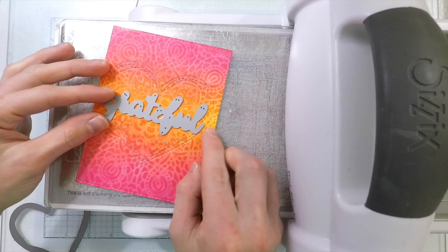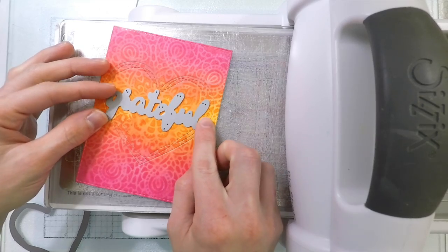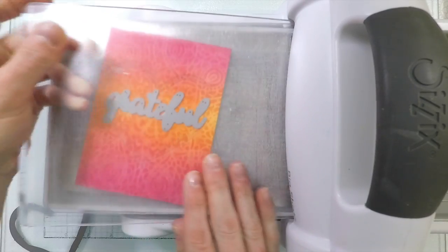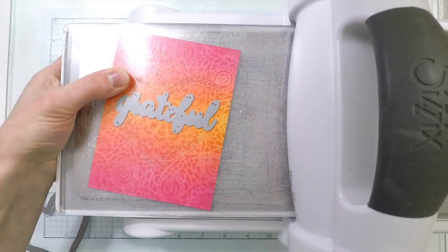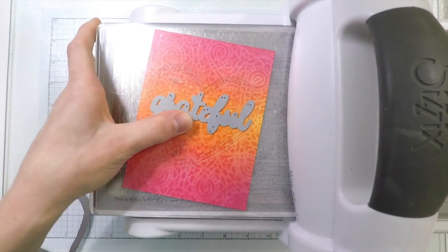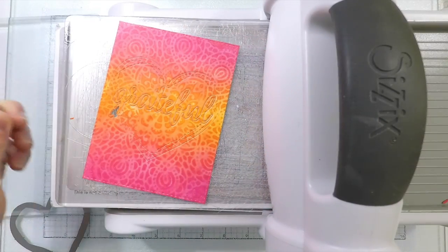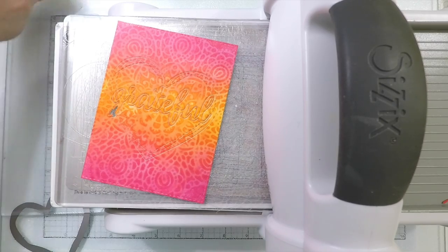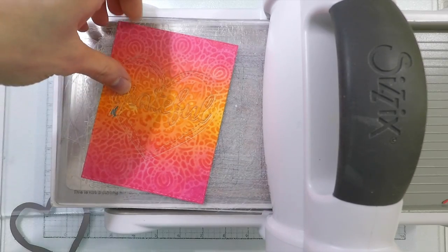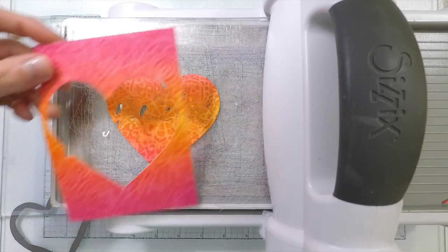I'm bringing in a grateful word die and I'm going to cut this over top of all of my die cut pieces. I have not removed them from the cutting plates because that's going to allow me to make sure that all of my die cutting stays in the exact same place so that way when I go to rebuild this by doing some inlay die cutting, everything will line up perfectly.